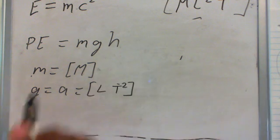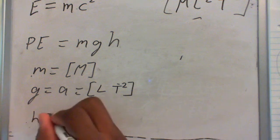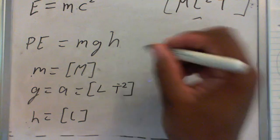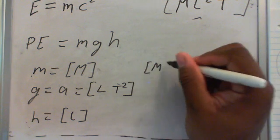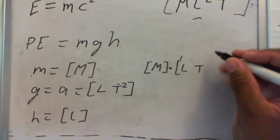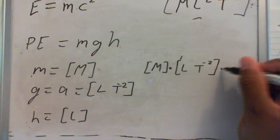H, which is height, is just a length, so it's an L. So let's multiply all this together. M times L over T squared times L.